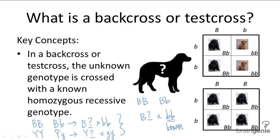So based on the offspring, the dog breeder can work backwards to tell whether his black dog is homozygous dominant or heterozygous.